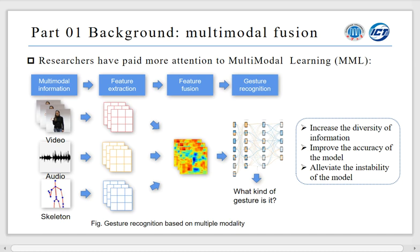Most researchers have paid more attention to multimodal learning to increase the diversity of information, improve the accuracy of the model, and alleviate the instability. As the figure is shown, multimodal learning is to process multiple modalities information and design a network for the task.